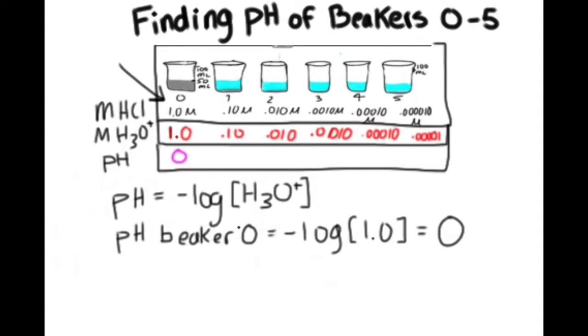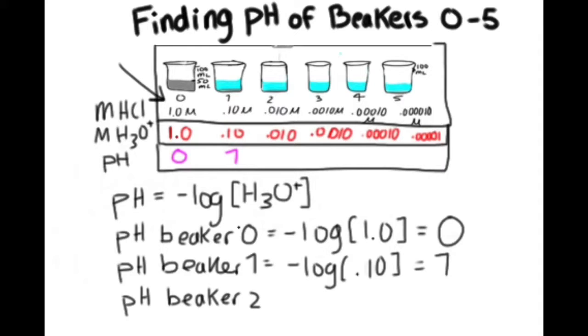For beaker one, it would be negative log point one, which is equal to one. And for beaker two, it would be negative log point zero one, which equals two.